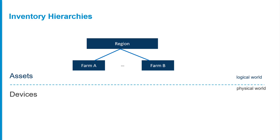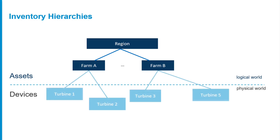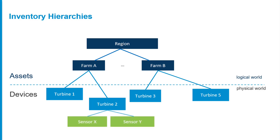Importantly, before you can use a device in a cockpit application, a device has to be assigned to a group. Devices will also have their own hierarchy. Therefore, we have two hierarchies: one hierarchy for the assets and one hierarchy for the devices. The device hierarchy shows how devices are linked to Cumulocity from a communication point of view.